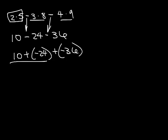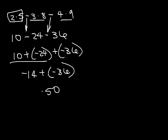Positive 10 plus negative 24 — take the difference between the two since they have different signs, and I get 14; the largest number is negative. Then I've got this here; signs are the same, so I add them together, put the sign on there, and I'm done.